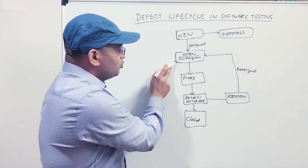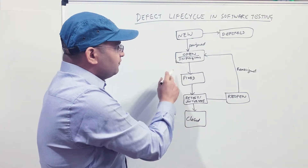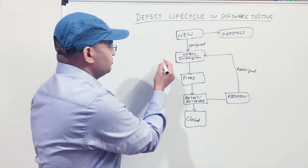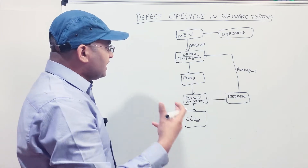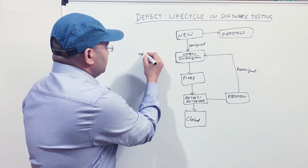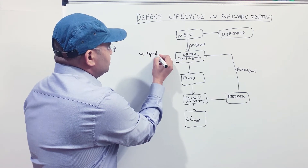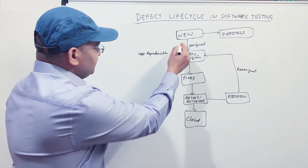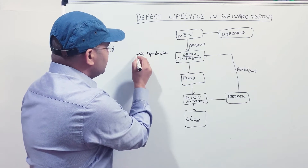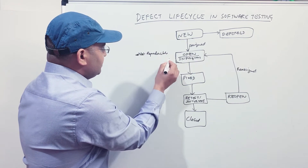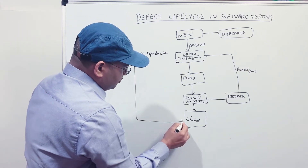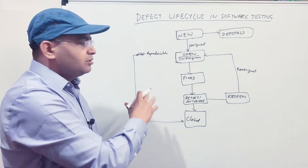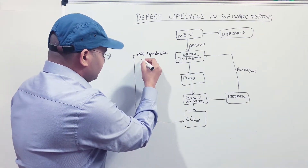There are additional scenarios: say the defect is in the New or Open state and during analysis the developer finds it is not reproducible — he cannot reproduce the issue. In that case, he marks the resolution as Not Reproducible and moves the defect to Closed.